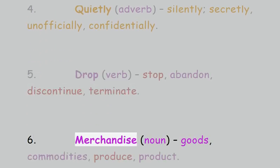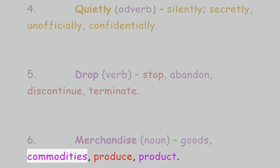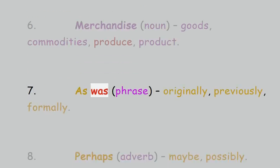6. Merchandise, noun: goods, commodities, produce, product. 7. As was, phrase: originally, previously, formally. 8. Perhaps, adverb: maybe, possibly.